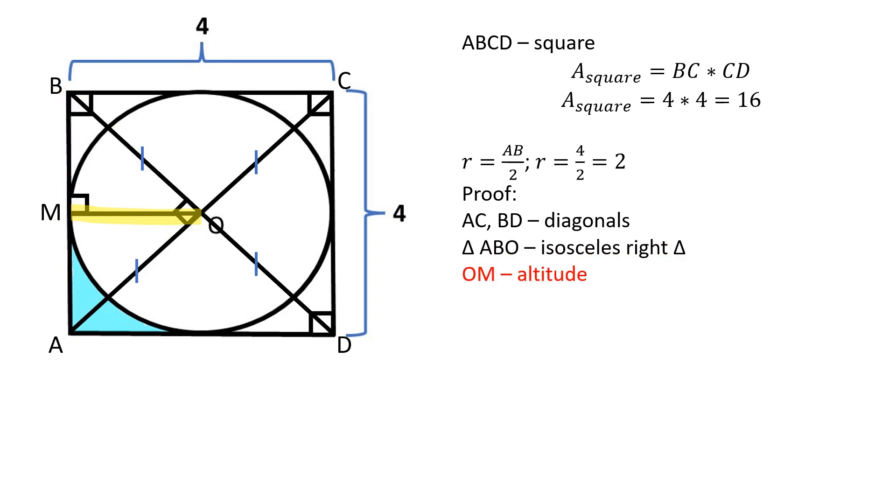OM is an altitude because the radius is perpendicular to the tangent line at point of tangency. And since triangle ABO is an isosceles triangle, OM is also a median. The median to the hypotenuse is equal to half of the hypotenuse. Therefore, OM is equal to 2.